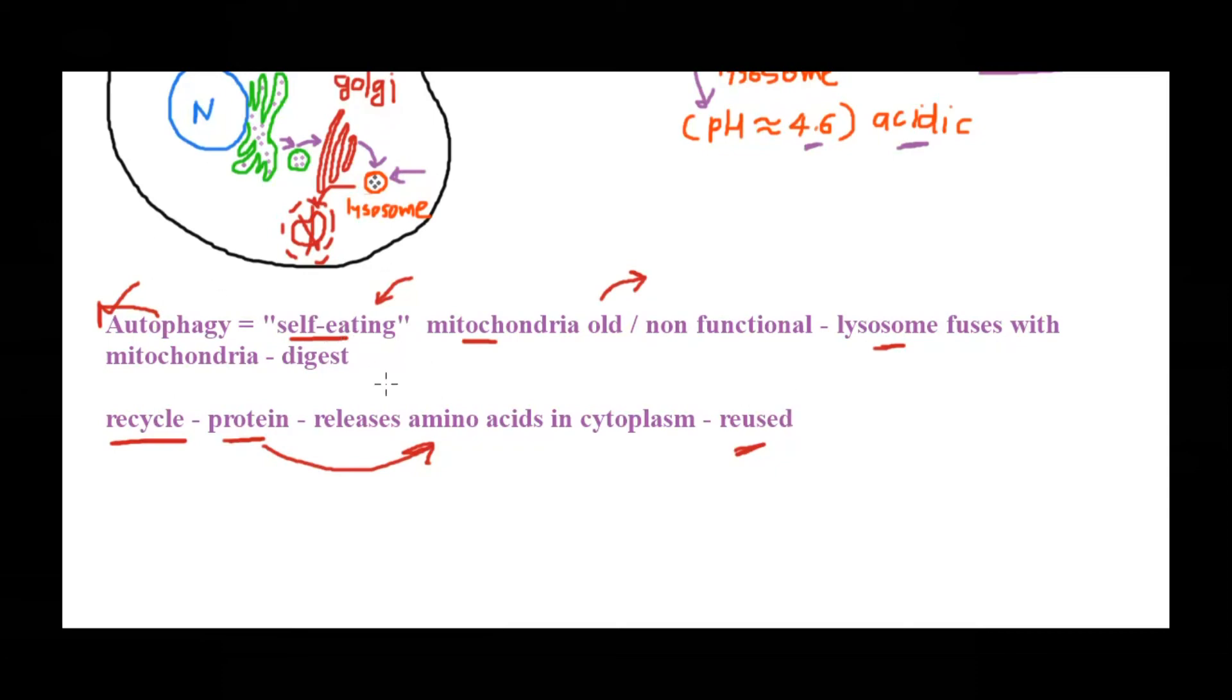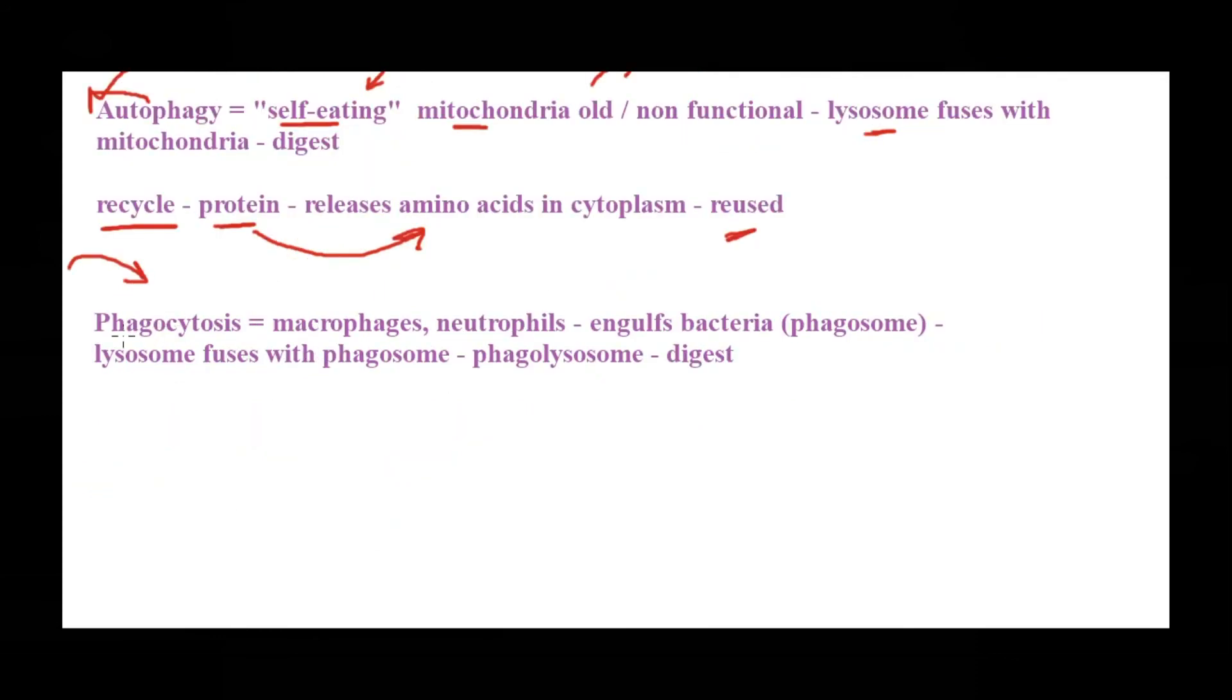Autophagy is self-eating - it's a phenomenon occurring when there is an old or non-functional organelle in the cell. The second function is when something harmful or dangerous is entering from outside to inside of a cell. Some external material has entered the cell. Phagocytosis is the best example to understand this. We know phagocytosis is when phagocytic cells, for example macrophages and neutrophils, engulf any bacteria or harmful pathogen and form the phagosome.